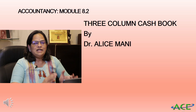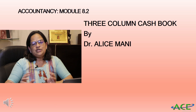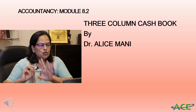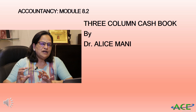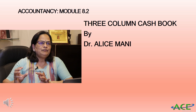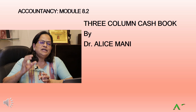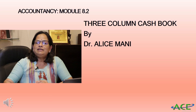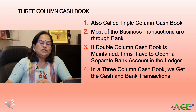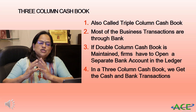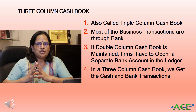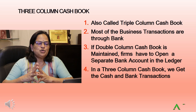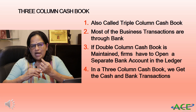In single column cash book, only one amount column is there. In two column cash book, the amount column is divided into cash and discount. In three column cash book, it is divided into cash, discount, and bank — that is the difference. This three column cash book is also known as the triple column cash book. If we maintain a triple column cash book, we don't have to prepare cash ledger and bank ledger separately.